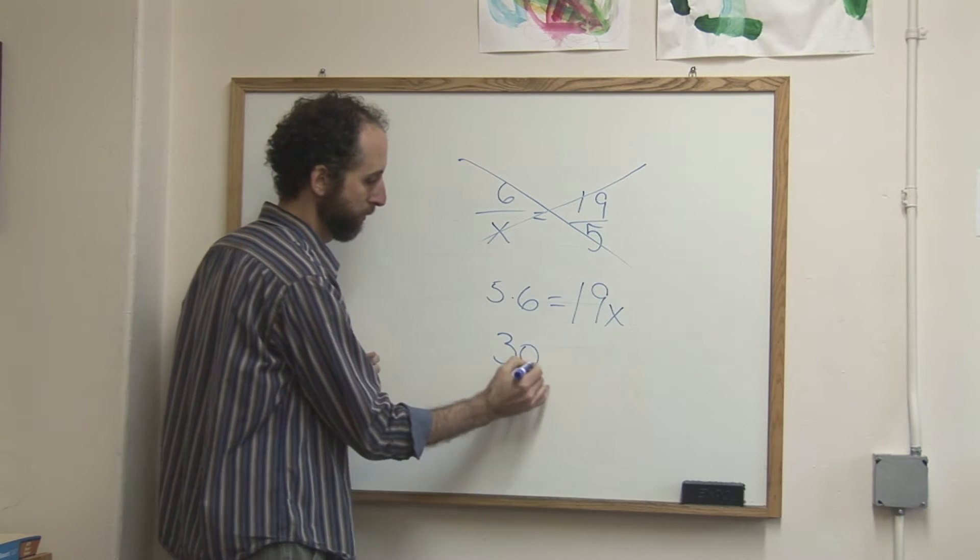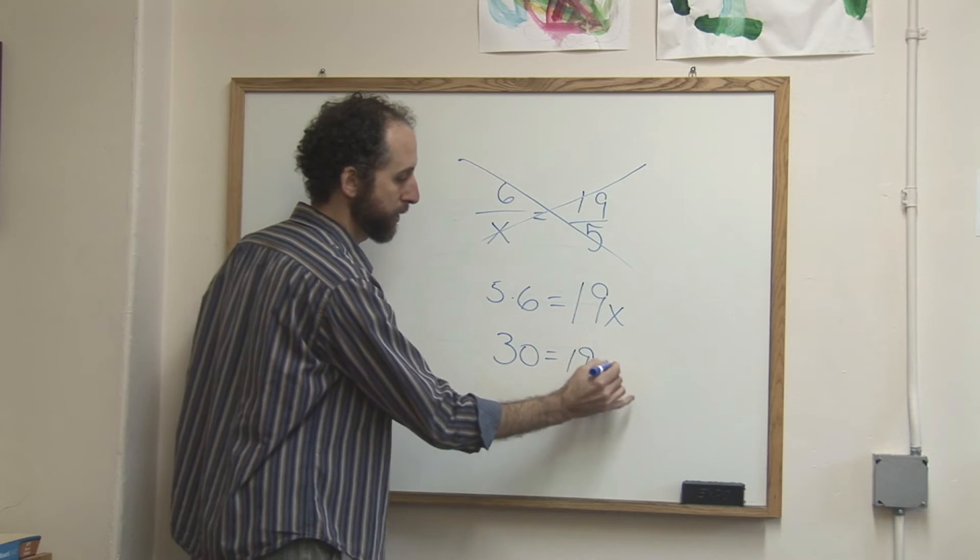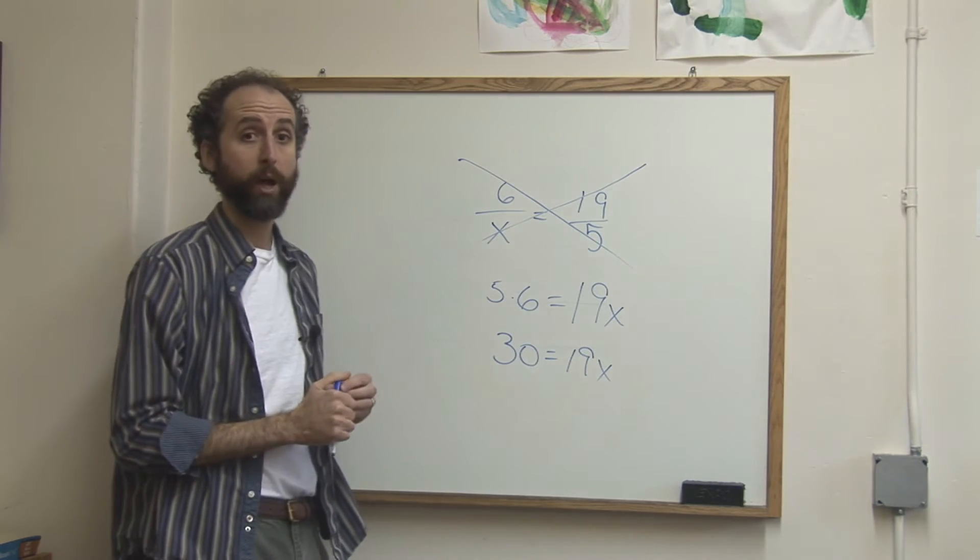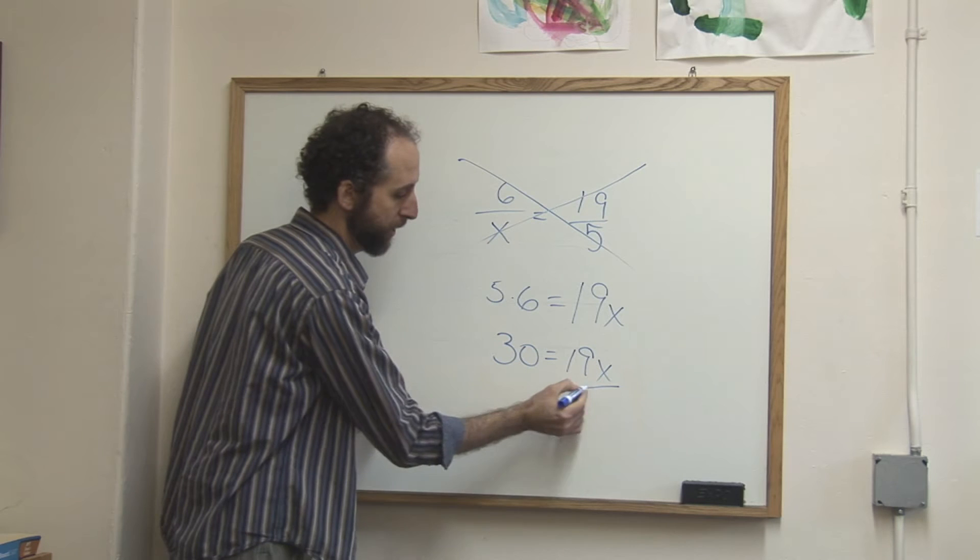5 times 6 is 30, equals 19x, and then you're going to solve for x. The best way to get x alone is divide both sides by 19.